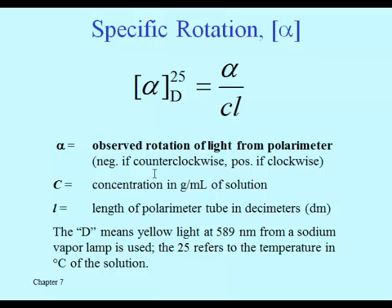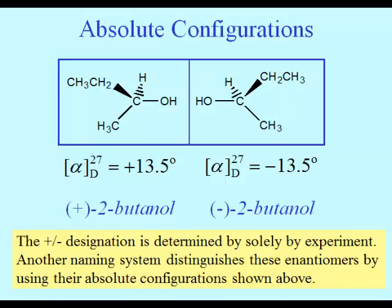Under the same concentration and path length, with the same type of light, enantiomers give exactly opposite results. The yellow light from a sodium vapor lamp is traditionally the wavelength used to compare enantiomers. Different colors of light rotate to different degrees even for the same compound, so all of these conditions must be specified when comparing one sample to another. That specific rotation number is quoted a lot in conjunction with chiral molecules.